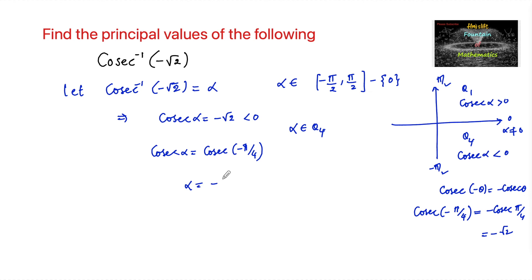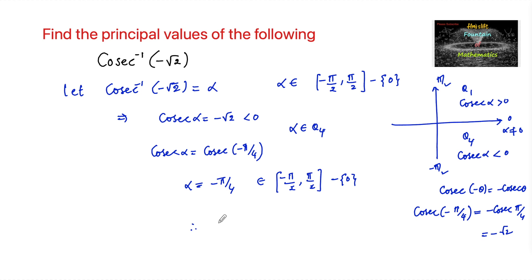Therefore alpha is equal to minus pi by 4, which belongs to the fourth quadrant and also belongs to the principal range minus pi by 2 to plus pi by 2, excluding 0. So the principal value of cosecant inverse of negative root 2 is negative pi by 4.